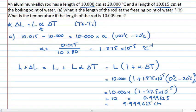So the rod has shortened by 3.75 microns. That's the answer for part A — the length of the rod at the freezing point of water is 9.99625 centimetres. For part B, I want to find the temperature at which the length of the rod is 10.009 centimetres.